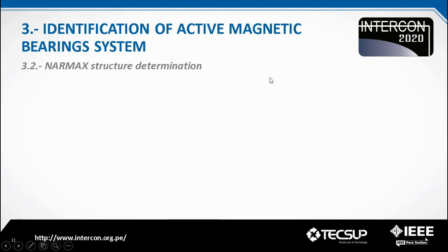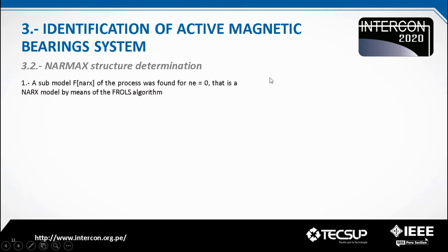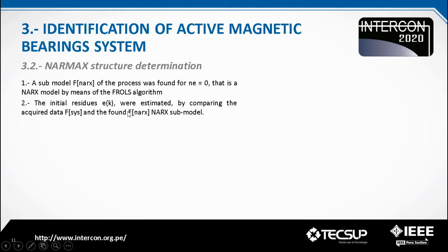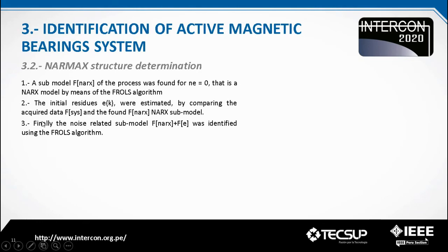In our initial polynomial NARMAX model, we have 18,564 terms, from which we must choose which dynamic and nonlinear terms must go in the final model. For that, the following steps were taken: First, a sub-model of the process was formed for ne equal to 0, using the forward regression orthogonal least-squares algorithm. The model found is the NARX model. Second, the initial residues were estimated by comparing the acquired data of the real system and the found NARX model. Third, the NARMAX model, combining the NARX model plus the error data, was identified using the forward regression orthogonal least-squares algorithm.